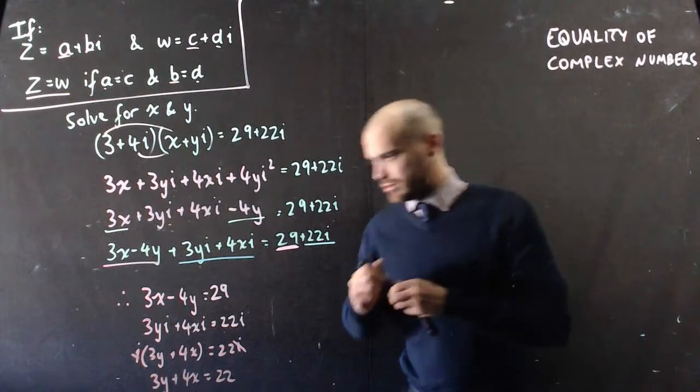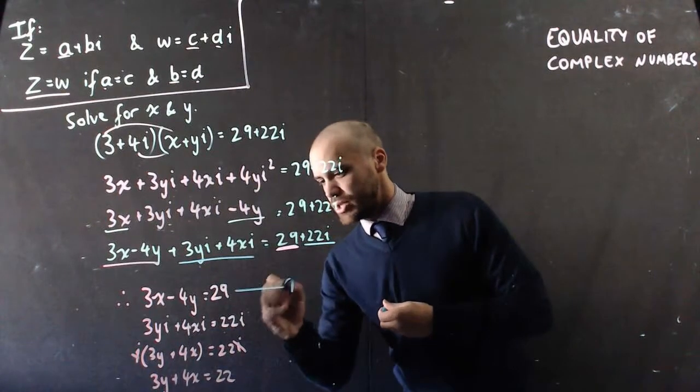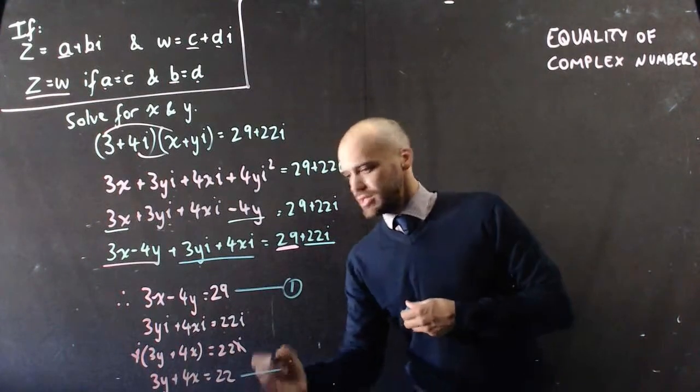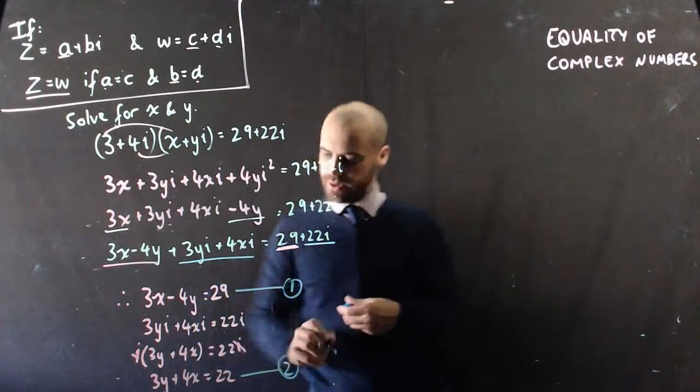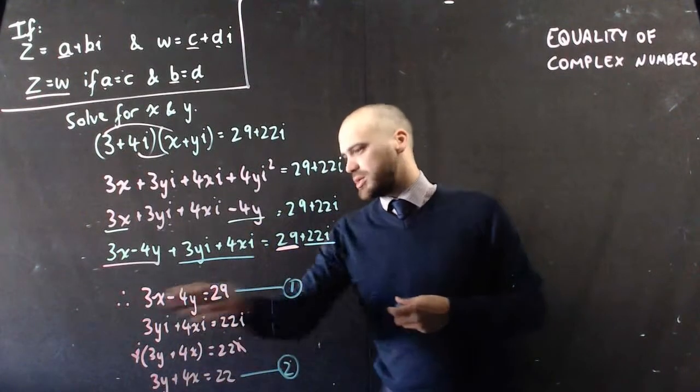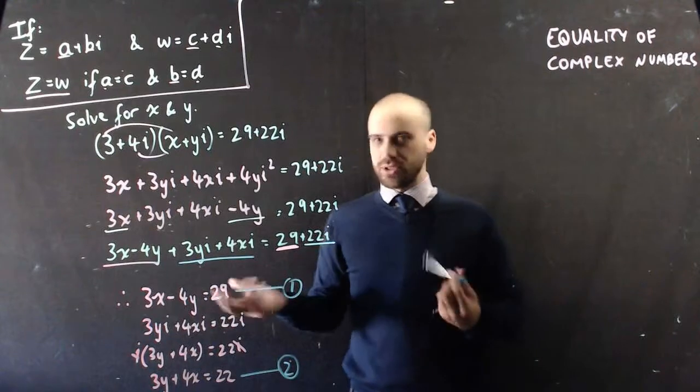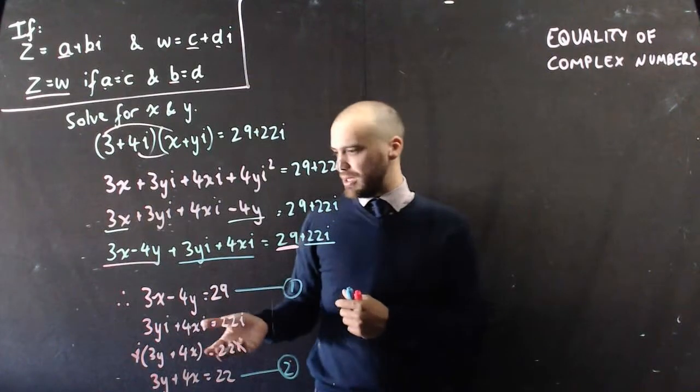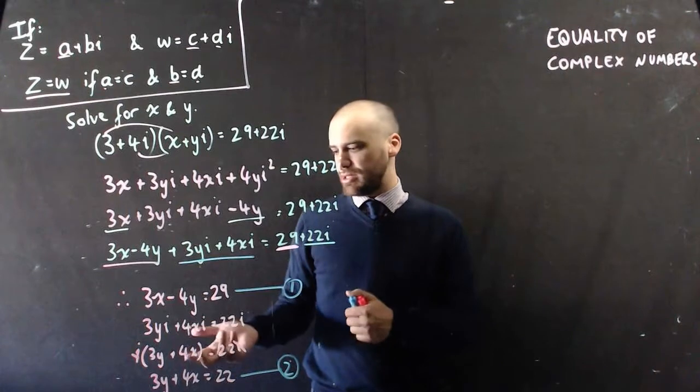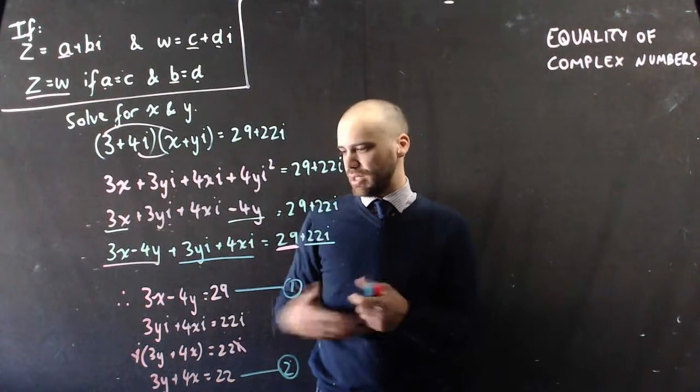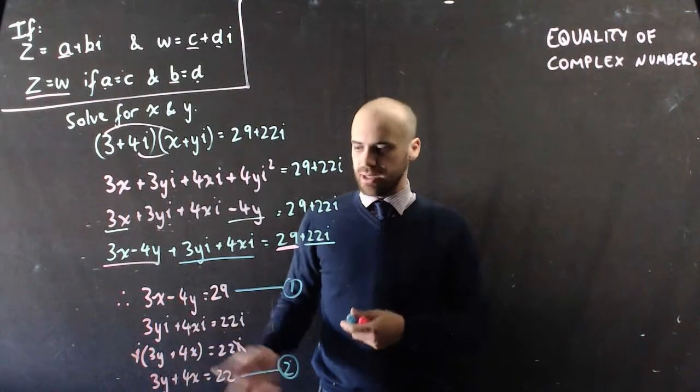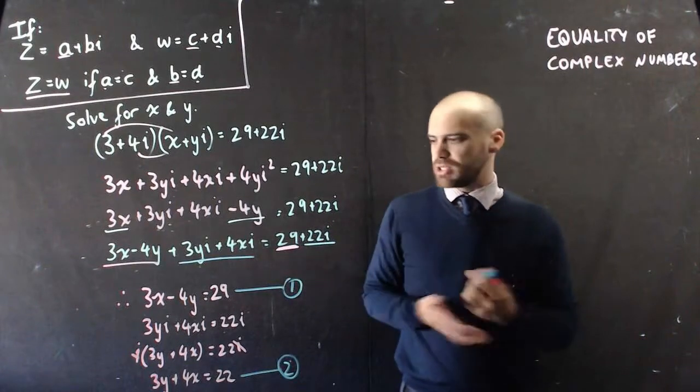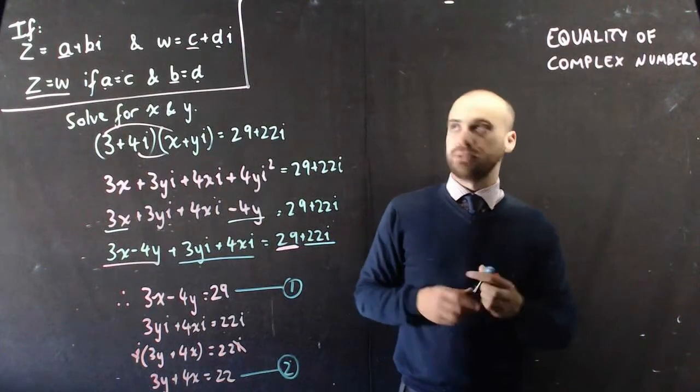Now, that means I have one equation here, I have a second equation here, with unknown y's and unknown x's. All I need to do now is solve them simultaneously. It looks like it's probably going to be easiest if I use elimination, so I'm going to do that. But you've solved simultaneous equations before, so I'm not going to talk you through it, I'm just going to do it.